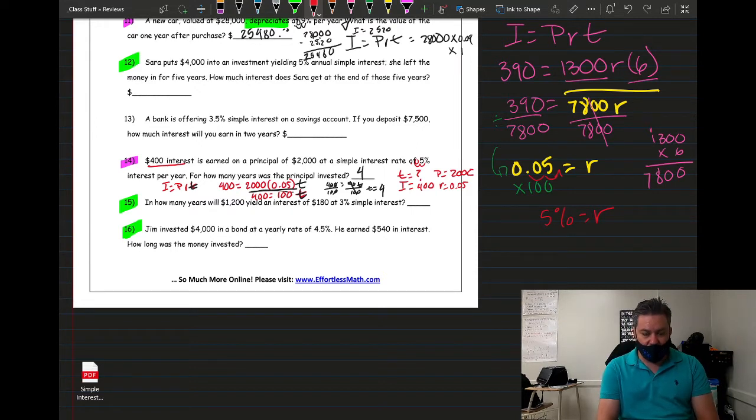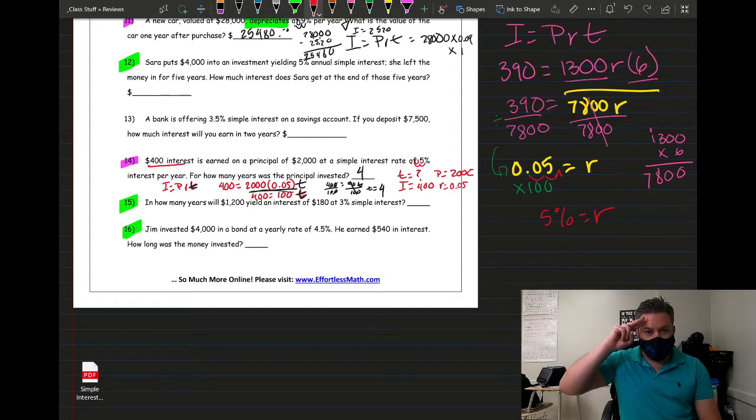That's how you find the rate. It's the same thing as finding the principal or the time. However, do not forget to change the decimal into a percent. That's the only difference. I hope that you learned something today. If you haven't, please make sure you subscribe. If you haven't seen my other videos, go ahead and check them out. Other than that, that is it for this one guys, and I'll see you on the next one. Goodbye.